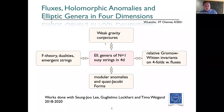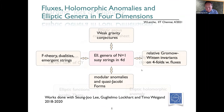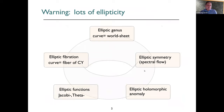We have this kind of relationships: gravity, F-theory dualities, the Gromov-Witten invariants on four-folds, and quasi-modular anomaly properties of Jacobi forms and modular anomalies. Be warned: the word 'elliptic' comes up often and has different meanings. These meanings are all related by dualities in one way or the other, so I hope no one will be confused.